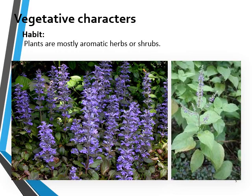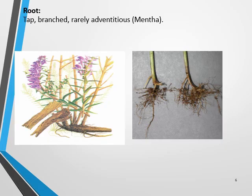In Lamiaceae family, plants are majorly herbs — annual, green, small-sized plants — or they may be shrubs, which are woody green plants whose main stem cannot be distinguished from branches. In addition, these herbs or shrubs produce aroma or fragrance due to the presence of various phenolic compounds, which are the source of aroma in this family.